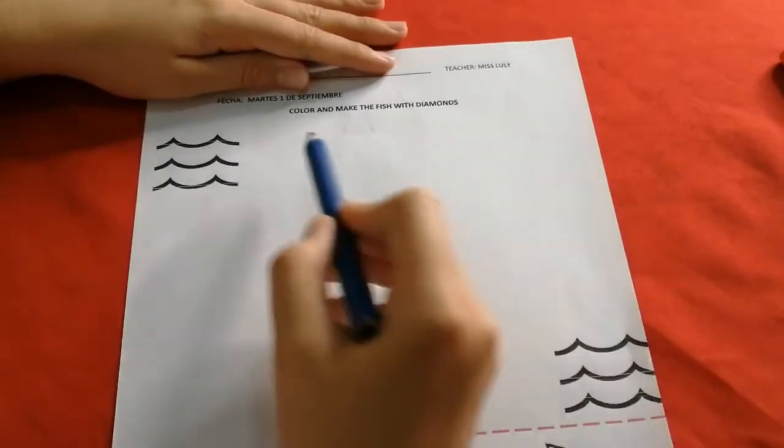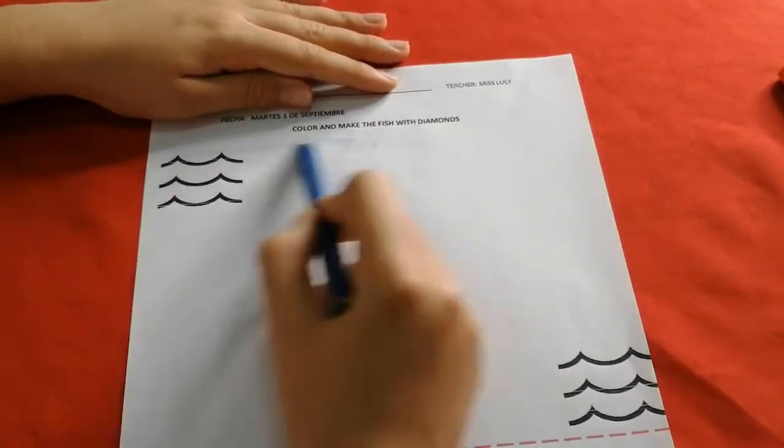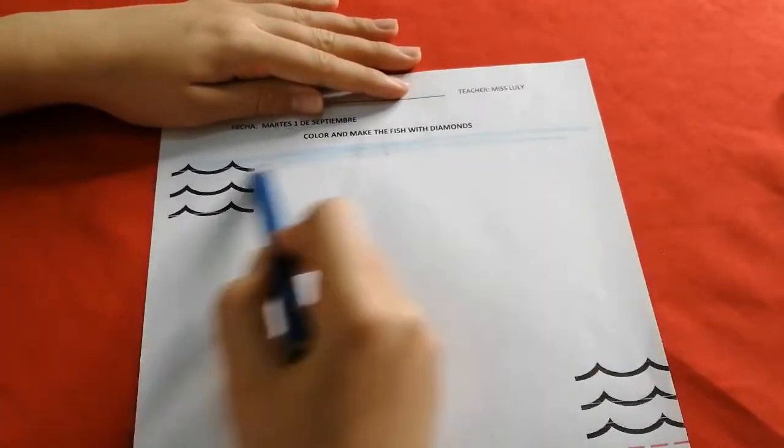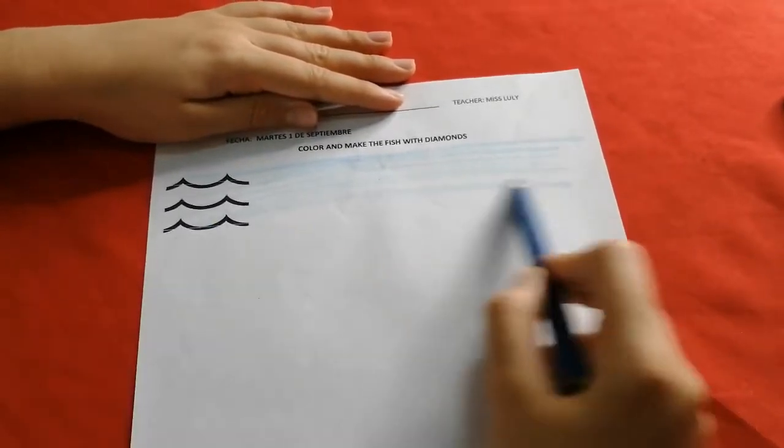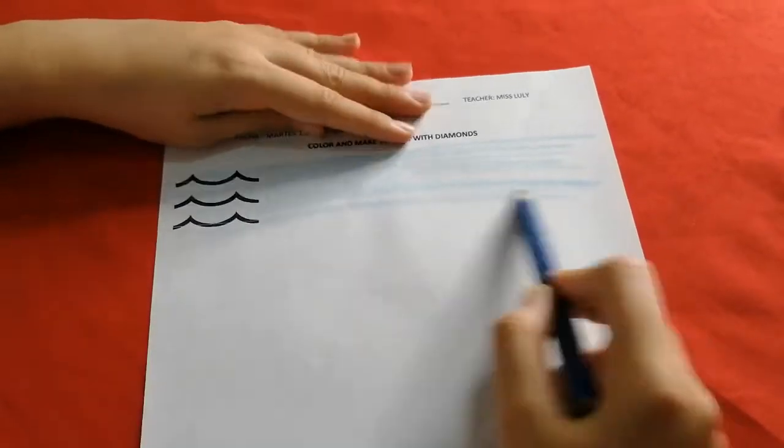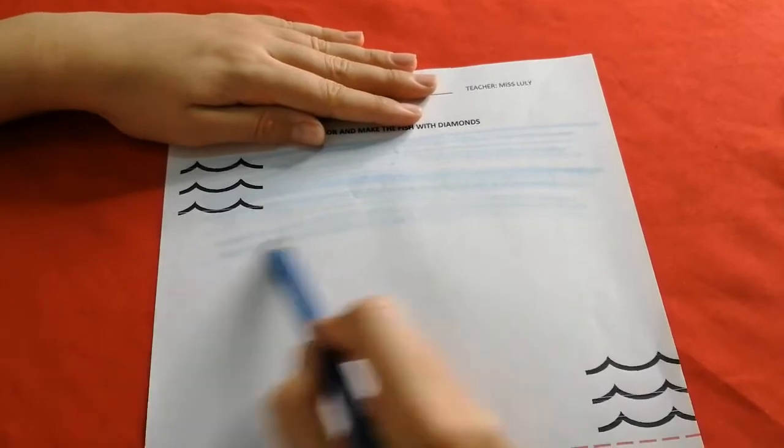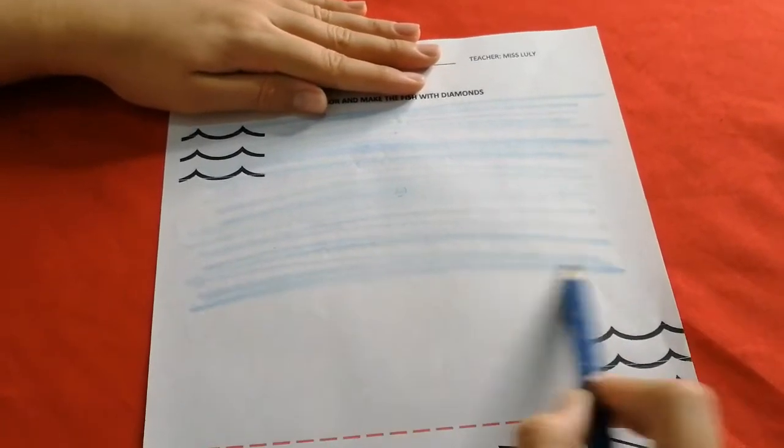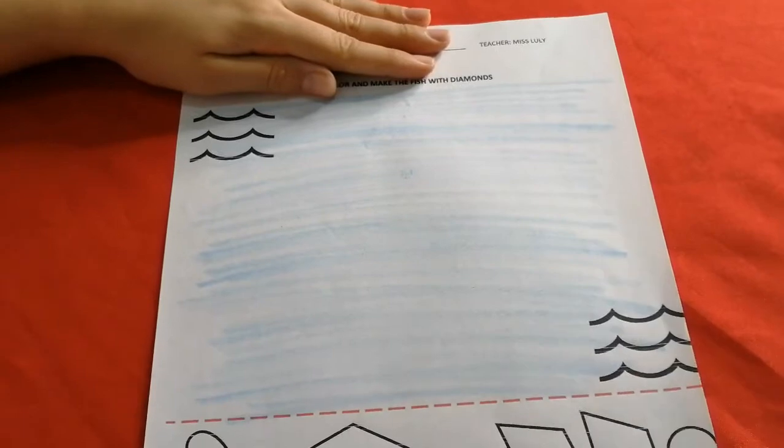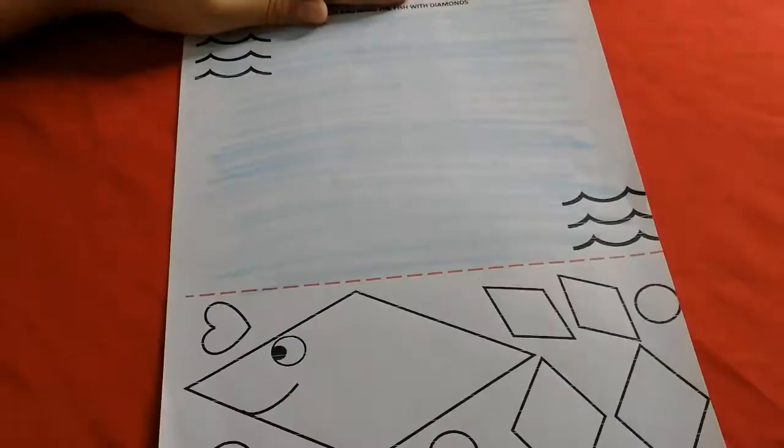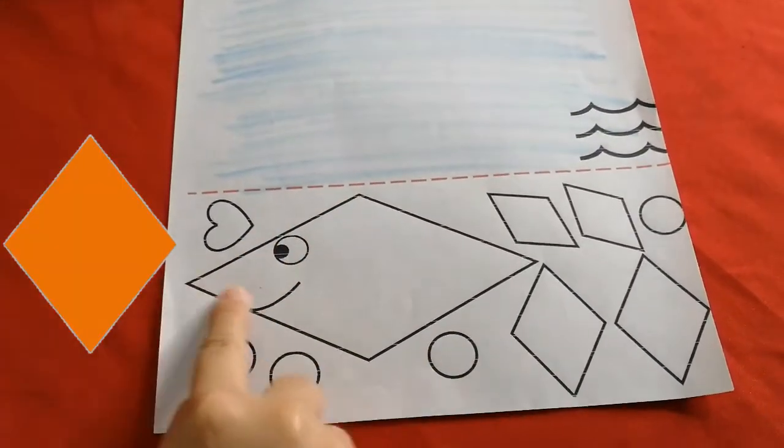Color the water with blue! Water, water, water, water, water! The water is blue! Water, water, water, water, water! Now color the fish is a diamond!